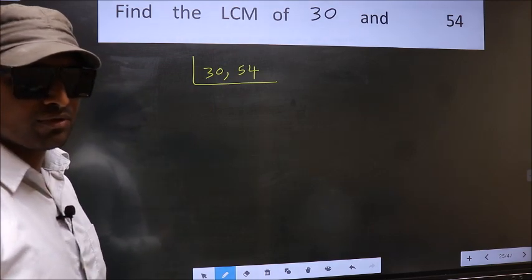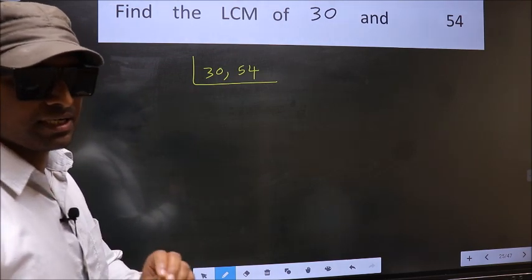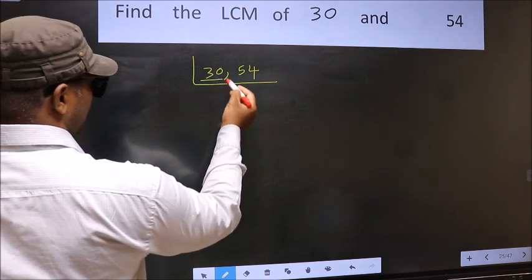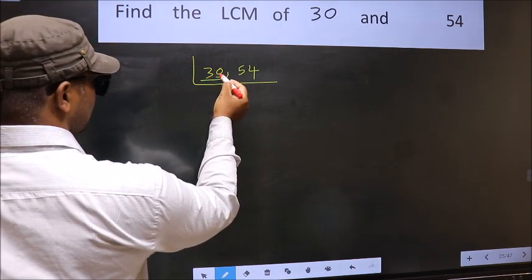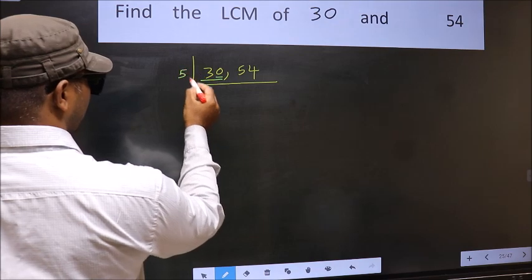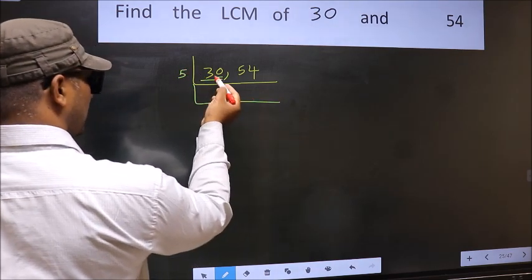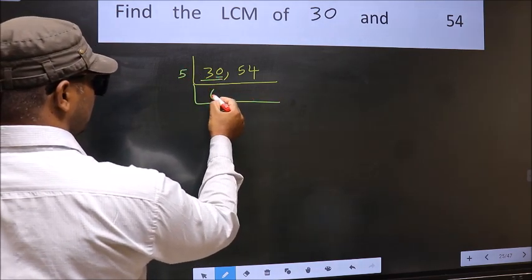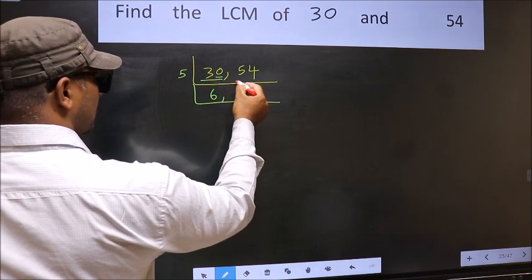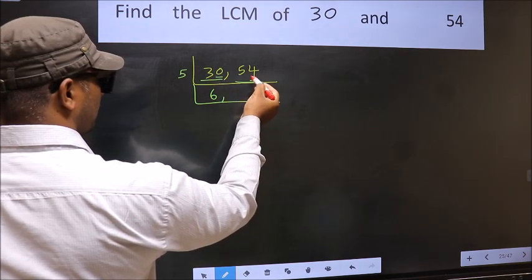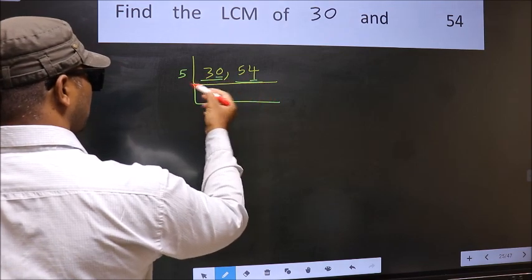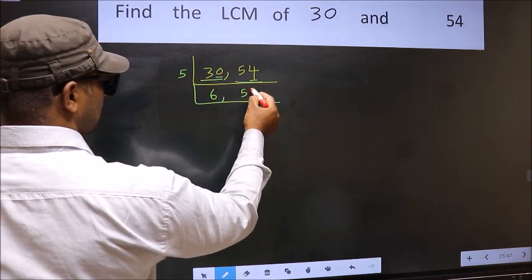Now you should focus on the first number, which is 30 here. For this number, last digit 0, so directly take 5. When do we get 30 in 5 table? 5, 6, 30. The other number 54, last digit neither 0 nor 5, so this is not divisible by 5, so we write it down as it is.